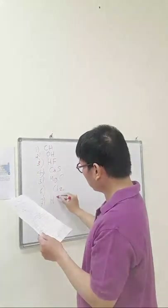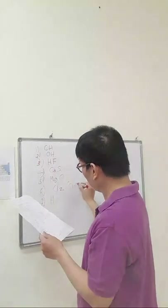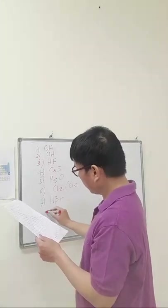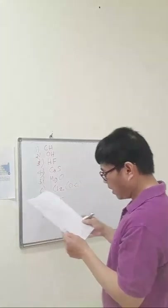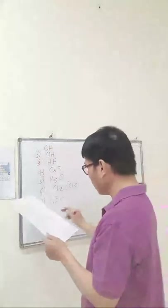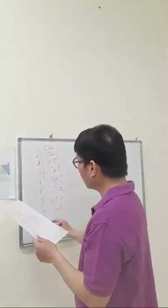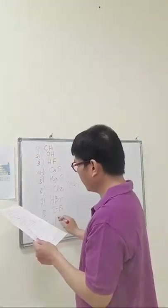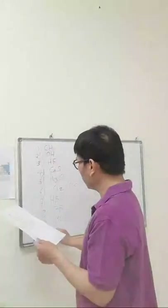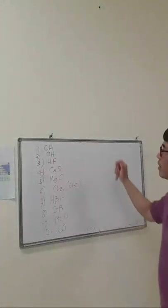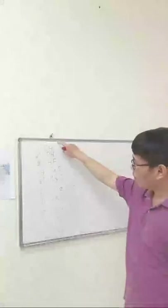Number seven: hydrobromic acid. Number eight: iodine bromide. Number nine: water. Number ten: carbon monoxide. The question is very straightforward — what is the type of chemical bond involved from one to ten?